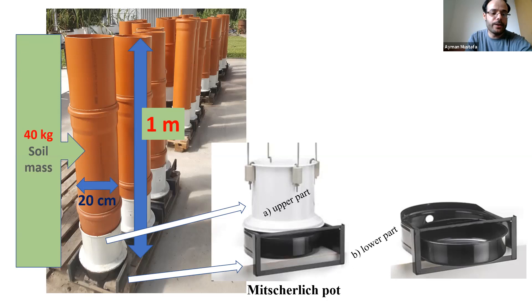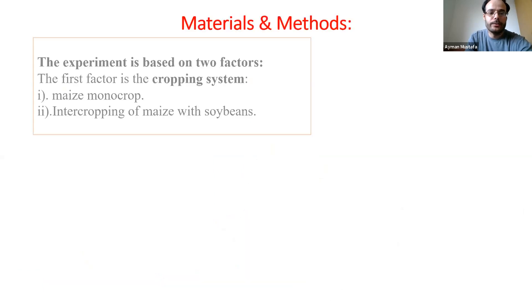The pots are 20 centimeters in diameter and can contain 40 kilograms of soil. We have two factors in this experiment. The first factor is the cropping system. We have two cropping systems in our experiment.